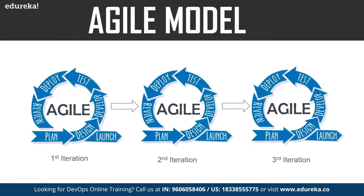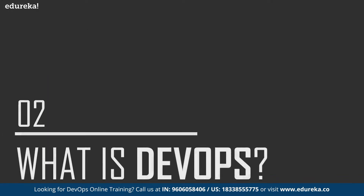The next model is the agile model, where the software is broken down into various iterations. Each iteration has phases such as planning, design, and development, and typically lasts 2 to 8 weeks. You release the software in the first iteration, gather feedback from end users, incorporate changes into the second iteration, and repeat. However, while agile brought agility to the development team, the operations team did not keep up, causing constant conflict between development and operations — the biggest drawback of the agile model.